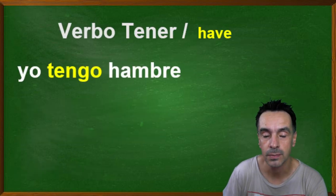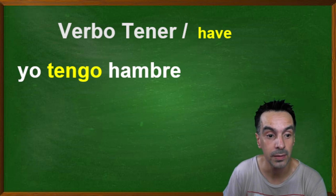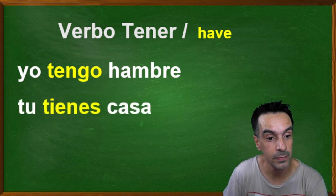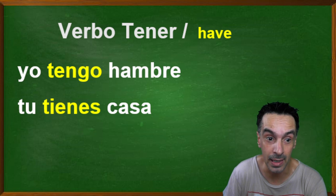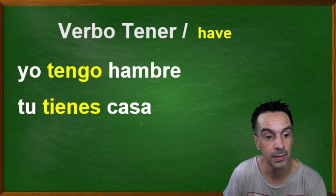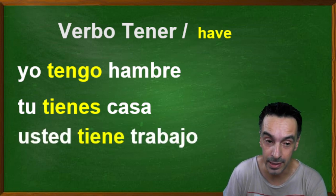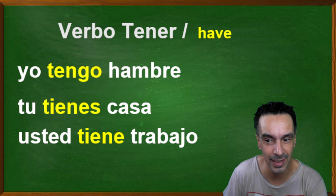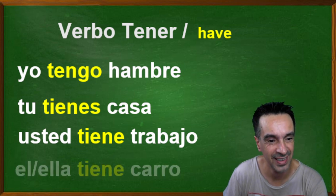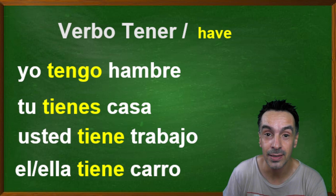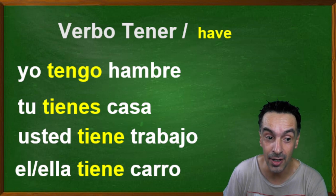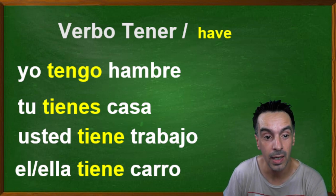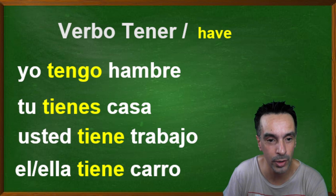Now, how do we normally use it? Yo tengo hambre, tú tienes casa, usted tiene trabajo. If you don't know the next word, go and find it. Él/ella tiene carro, which means: I have — I'm hungry.